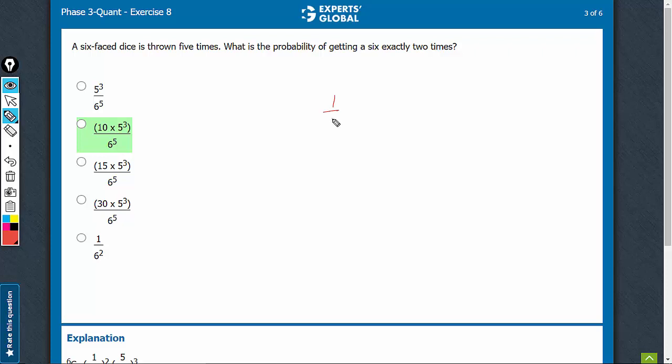The probability of getting a 6 is 1 by 6. The probability of not getting a 6 is 5 by 6.